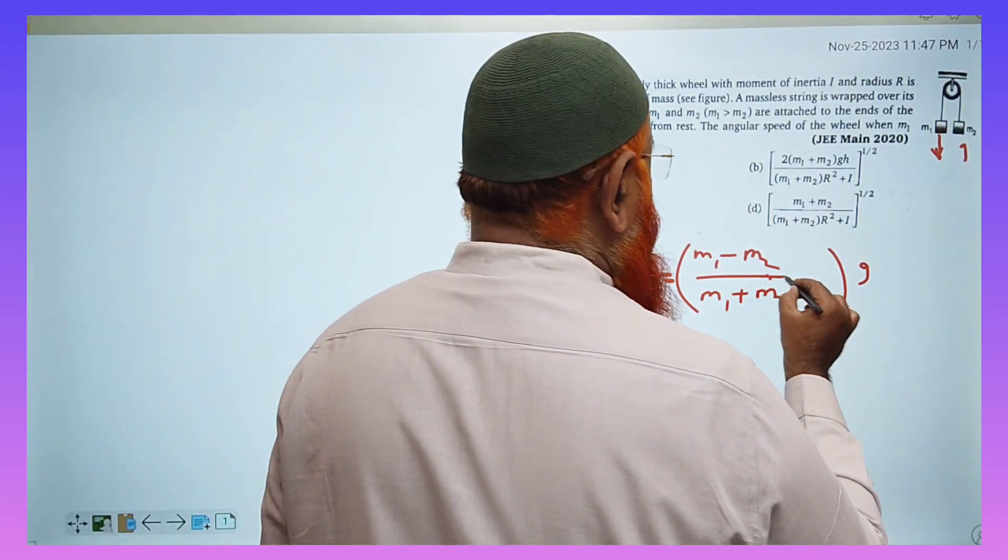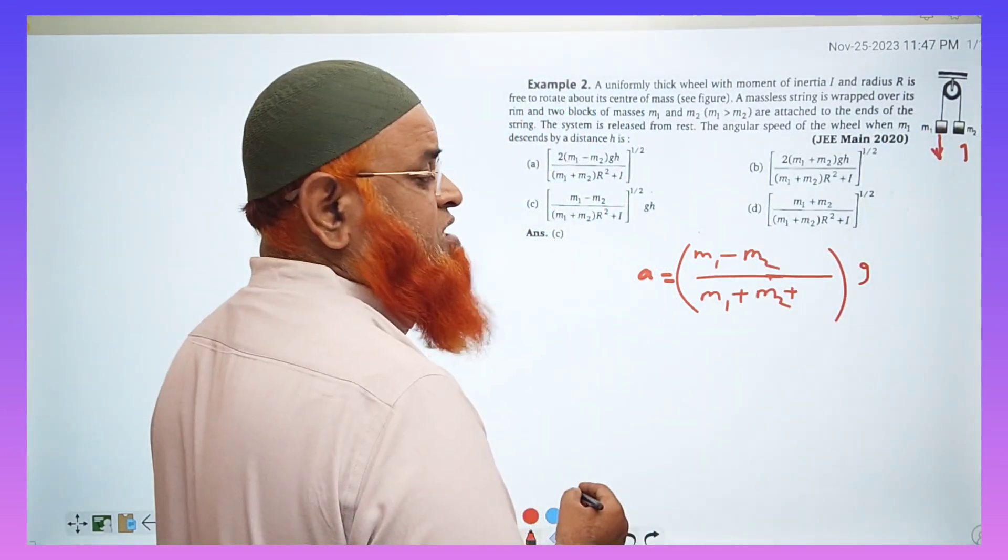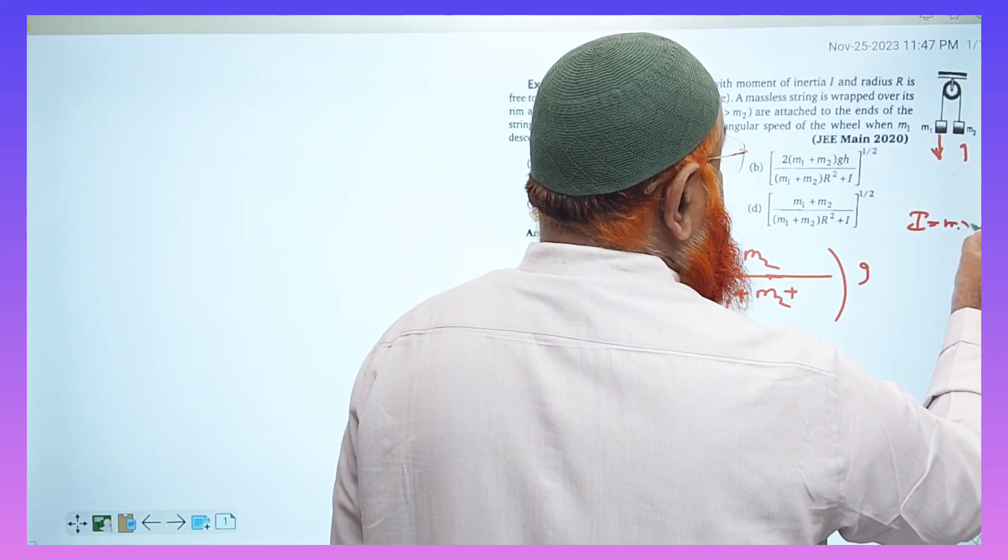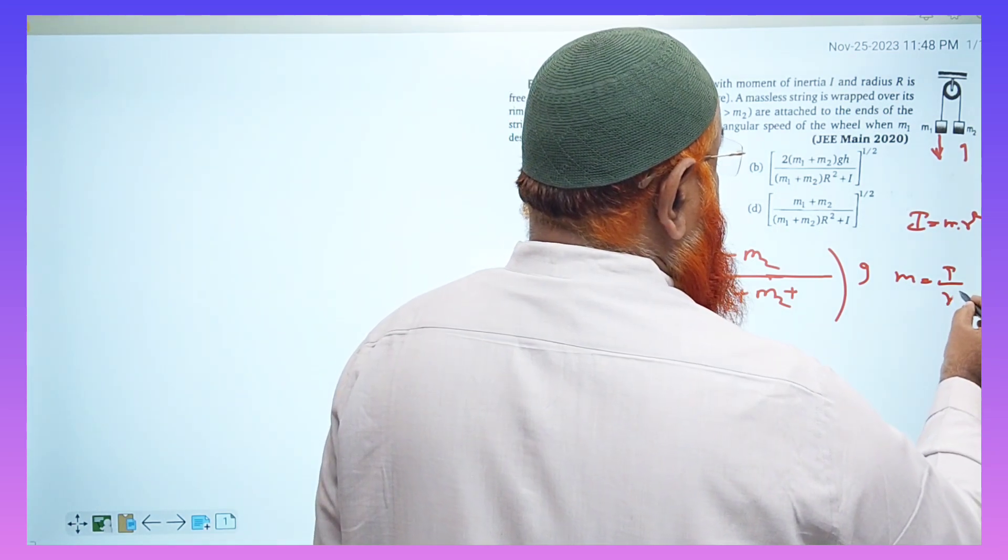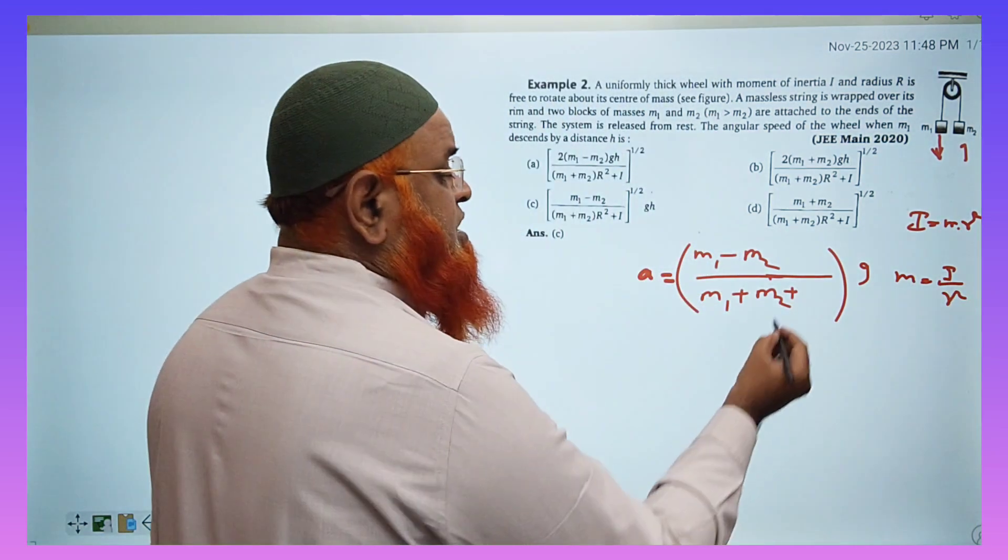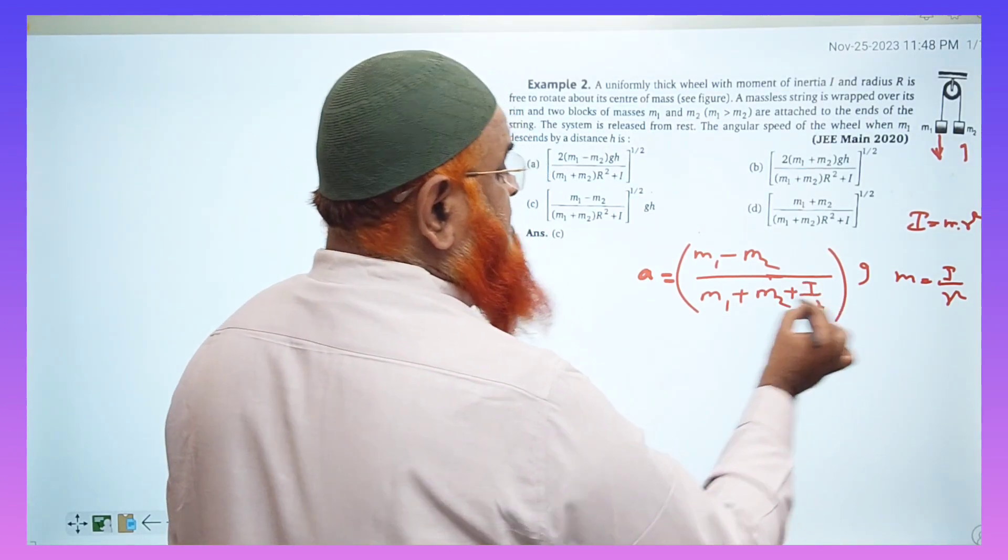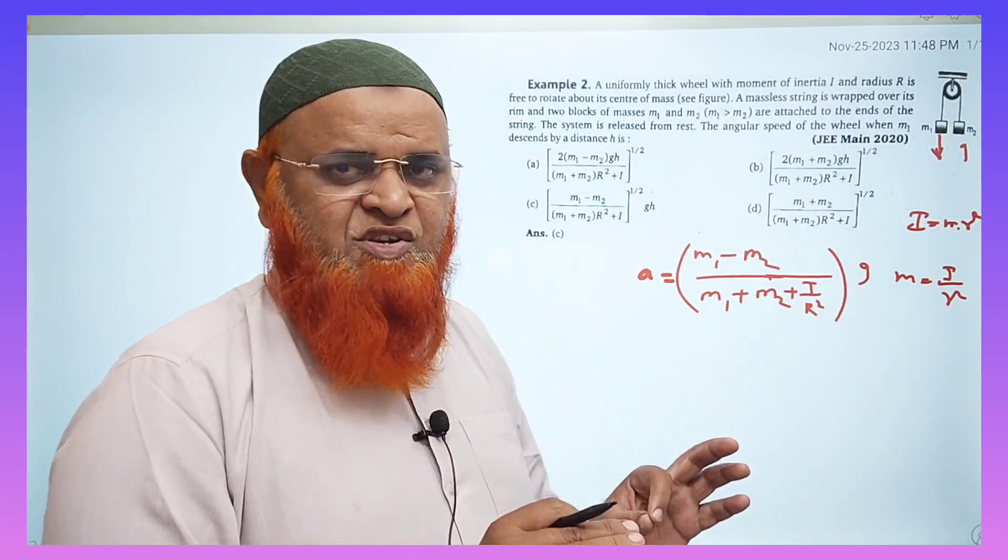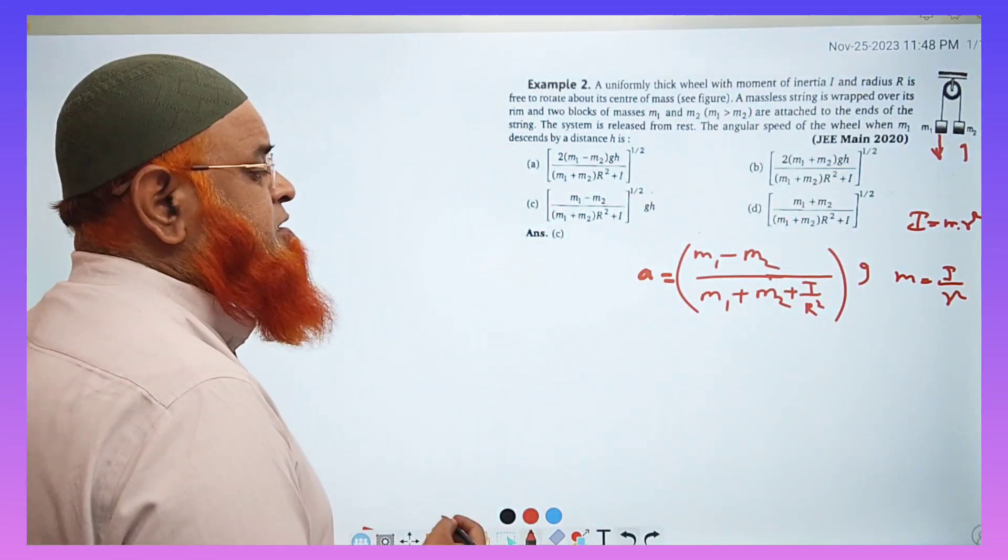we have to add one more mass, that is mass of the pulley. So what is the mass of the pulley here? You all know I is equal to mr square, but you have to write here m is equal to I by r square. So here you have to add I divided by r square, capital R. He has given the radius as capital R here. So that's a small change you have to do, you have to add I by r square.